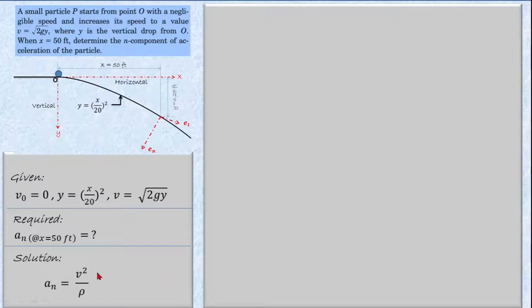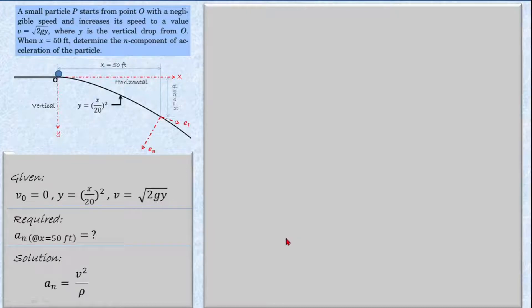To solve this problem we use the normal and tangential coordinate system principle, where the normal acceleration equals velocity squared at that position divided by the radius of curvature at that position: aₙ = v²/ρ. To evaluate this, we first need to find the velocity and then the radius of curvature.